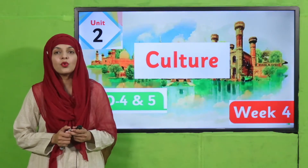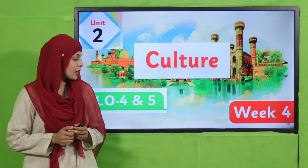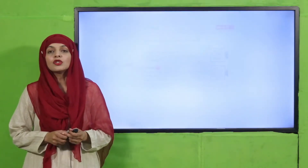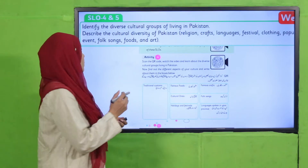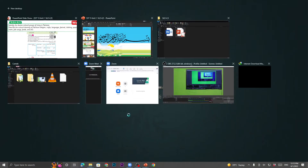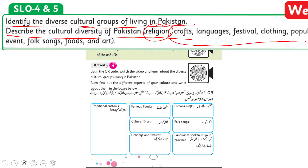My dear students, as you know we are on Unit Number Two of your Social Studies Five remedy pack. The name of our unit is Culture. Today we are going to discuss SLO number four and five. According to these two SLOs, students will be able to identify the diverse cultural groups living in Pakistan and describe the cultural diversity of Pakistan — including religion, craft, language, festivals, clothing, folk songs, foods, and art.